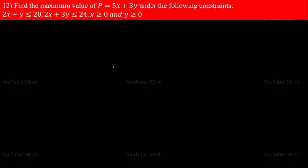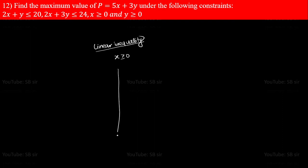Before solving this question, let's understand how to draw the graph of a linear inequality. Some inequalities are like x ≥ 0. A linear equation represents a straight line, while a linear inequality represents a half plane.